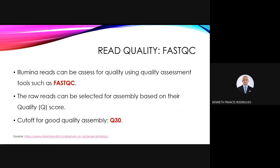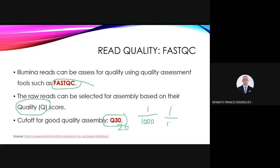The first step in genome assembly involves read quality. We use the FastQC tool — a quality control tool — and generally select reads based on the quality score or Q score. The cutoff for a good quality assembly is Q30, meaning one error in every 1,000 bases. Q20 implies an error rate of one in 100. It is generally recommended to go for Q30 and above; if you go for Q20 you will get an assembly but with a high error rate.